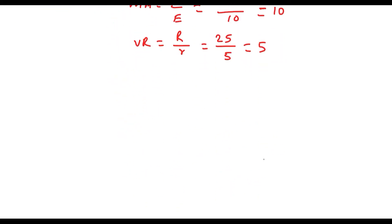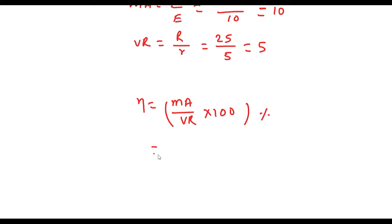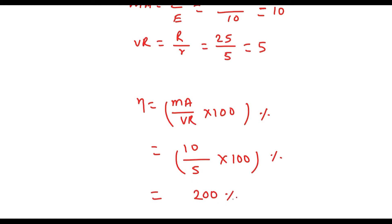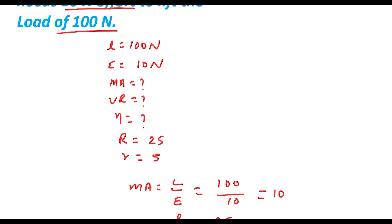Now we have to find the efficiency. We know that efficiency is calculated by MA divided by VR, multiplied by 100. MA is 10, VR is 5, so 10 divided by 5 equals 2, multiplied by 100 gives efficiency of 200 percent.